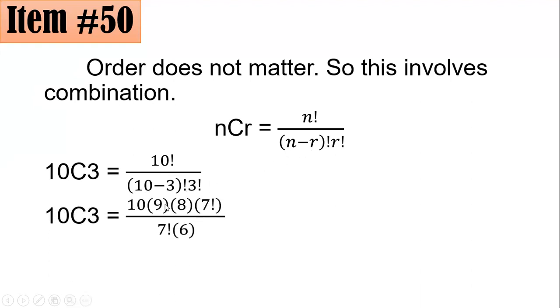And for that, 10 factorial could be expressed as 10 times 9 times 8 times 7 factorial. How come I stop with 7 factorial? Because I have here a 10 minus 3 factorial, which is 7 factorial, and I know that they will divide and simplify into 1. Now, 3 factorial means 3 times 2 times 1, which is 6. So what is left is 10 times 9 times 8 divided by 6. Or if you simplify that, 120. And that is the answer that we're looking for, letter A.